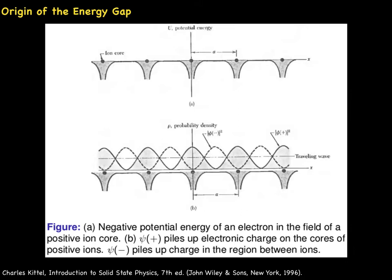ρ₋ describes that electrons are concentrated away from the ion cores. Before we leave this slide, let's appreciate figure 8. Figure 8 pictures how the electrostatic potential energy of a conduction electron varies in the field of the positive ion cores.